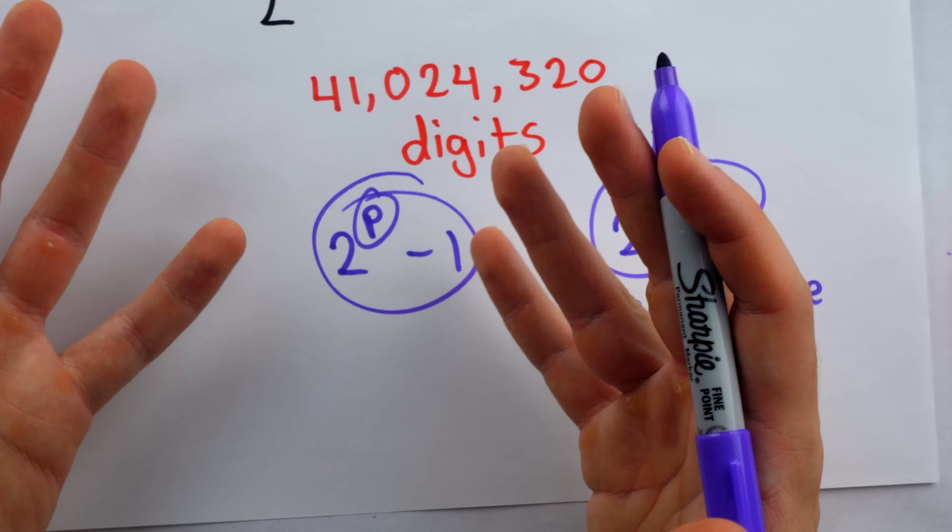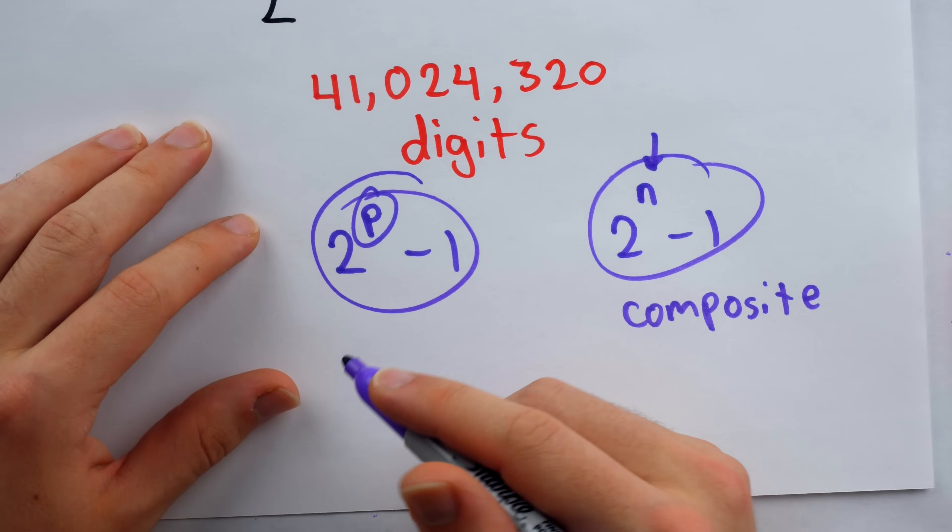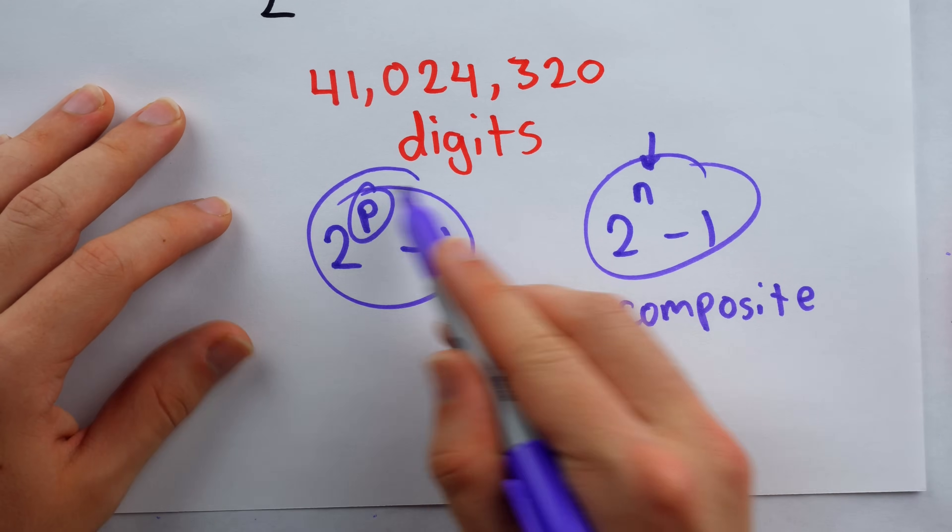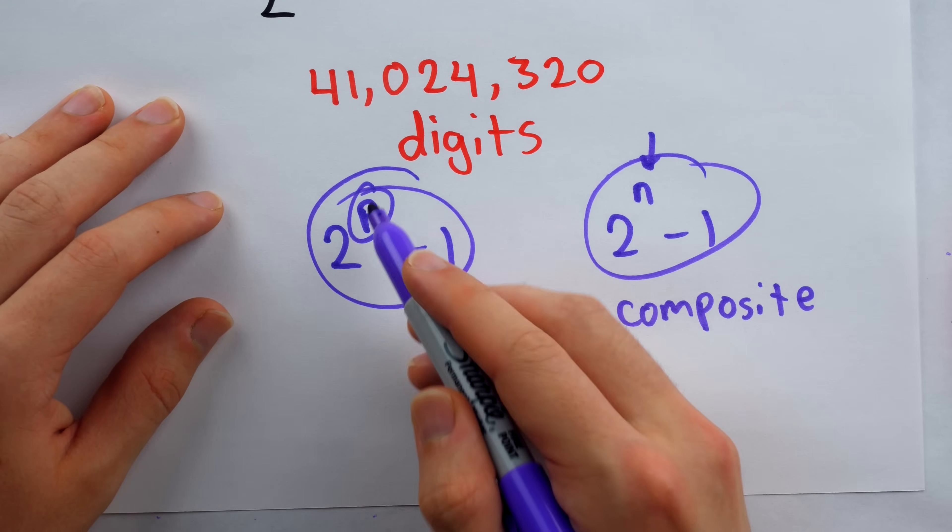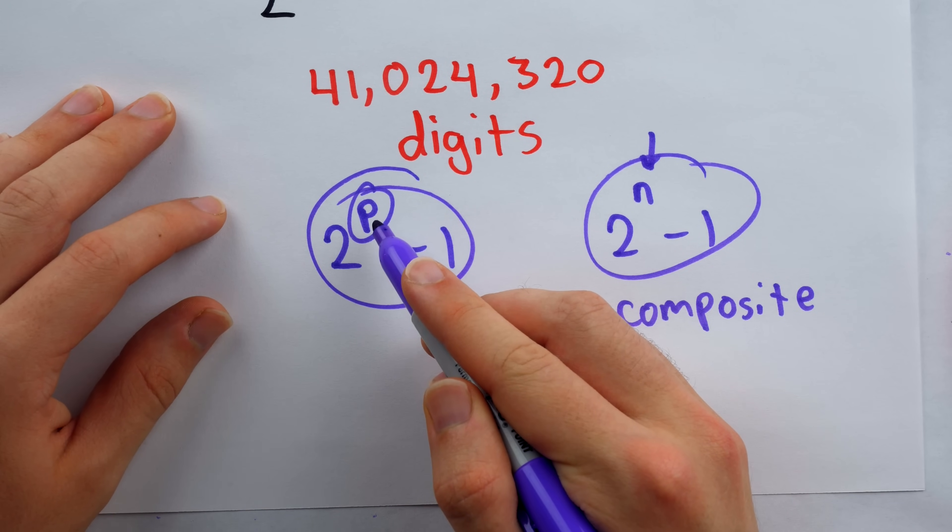I mean, the numbers got so big that without electronic computers, it was pretty difficult to reliably check the primeness of these numbers, even for small prime values of p.